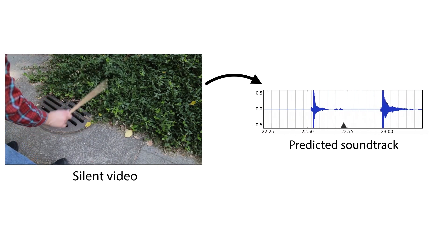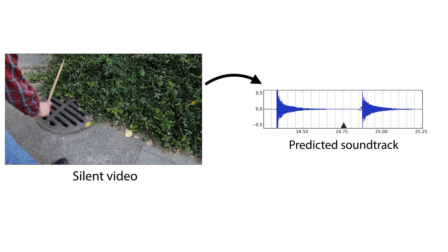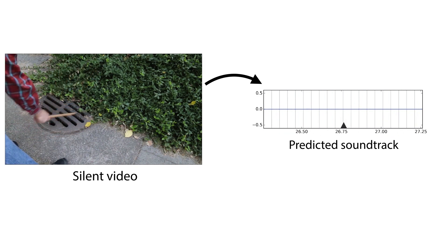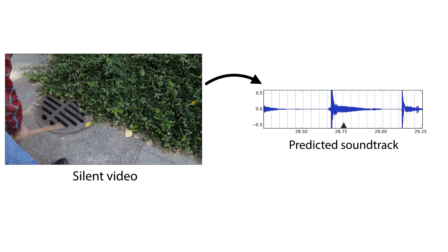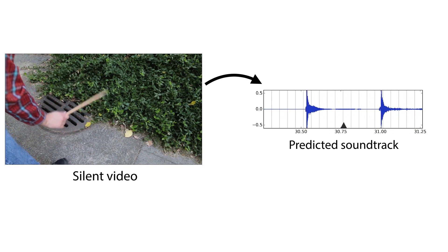To perform this task well, the algorithm has to recognize the materials that are being hit and the actions that are being performed, but we don't explicitly tell it about these things. Instead, it has to learn about them by recognizing patterns in the raw audiovisual signal.